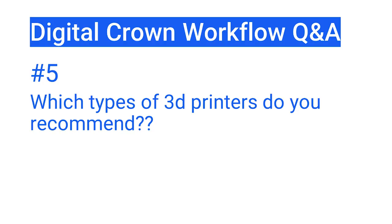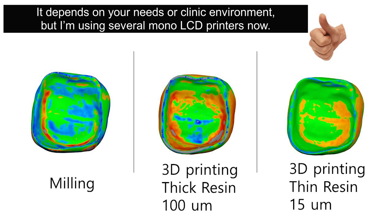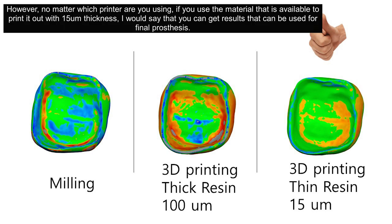Question number five, the last question: Which types of 3D printers do you recommend? It depends on your needs or cleaning environment. I'm using several mono LCD printers now. However, no matter which printer you are using, if you use material that is available to print at 15-micrometer layer thickness, I would say you can get results that can be used for a final prosthesis.